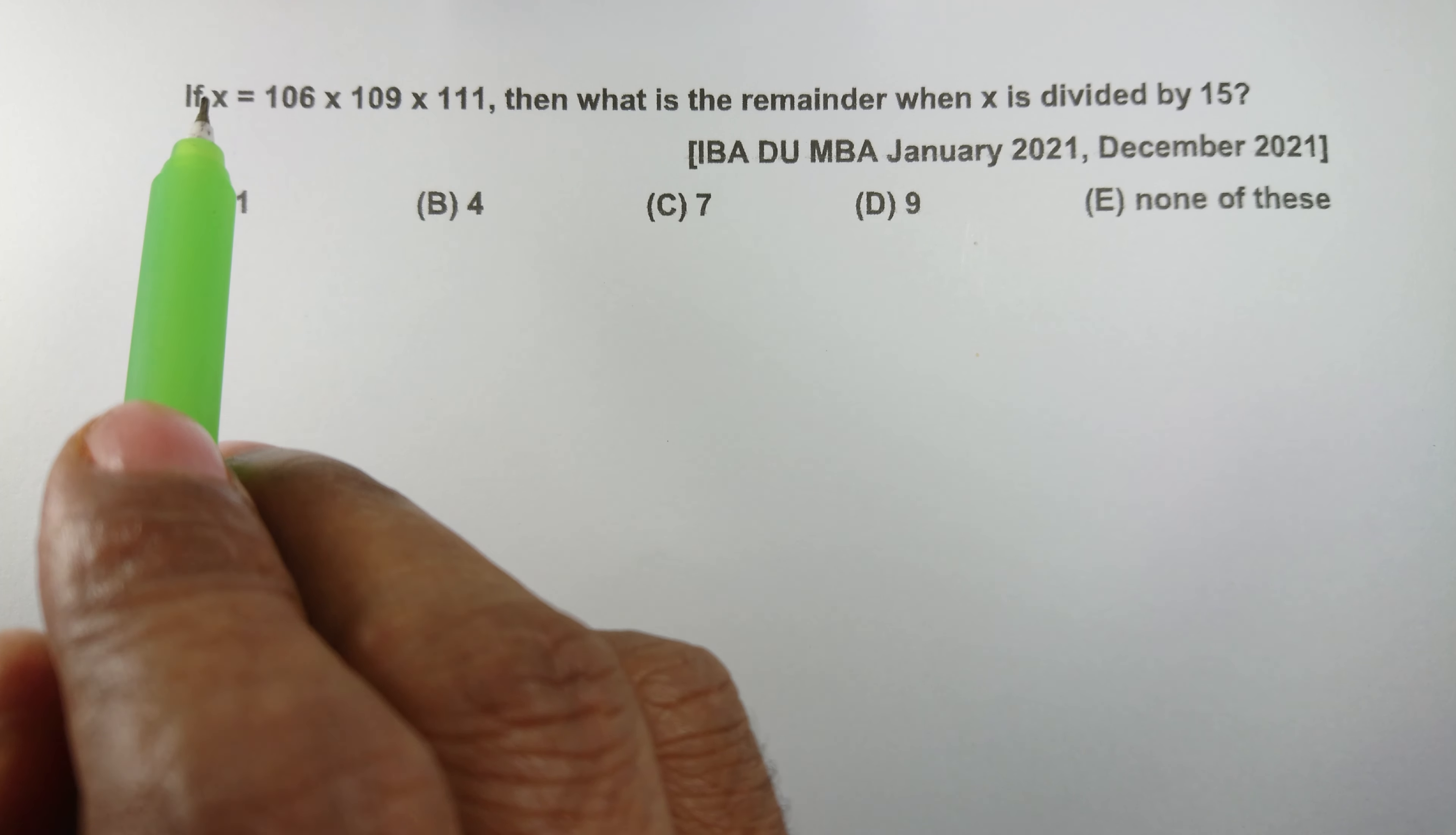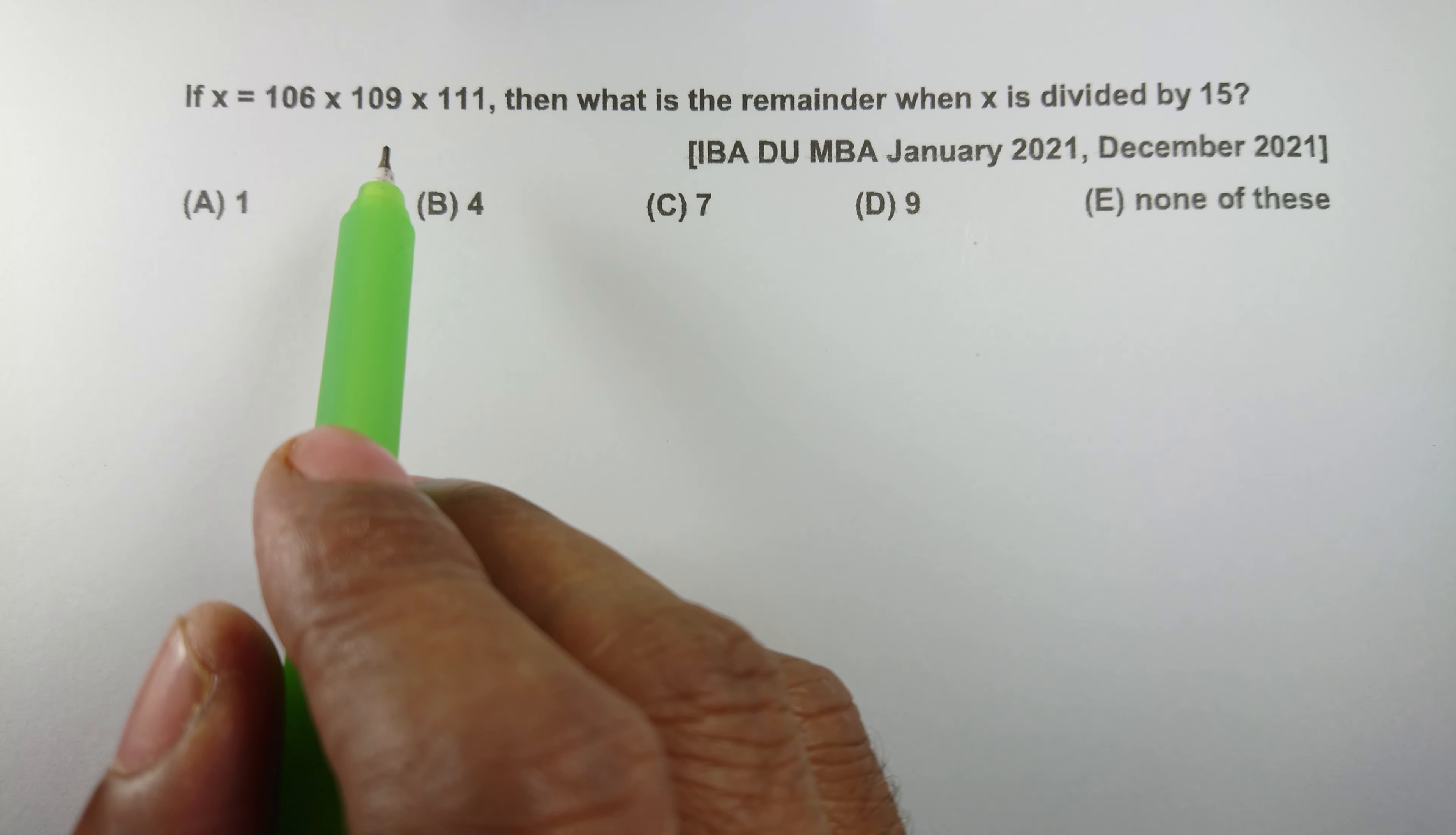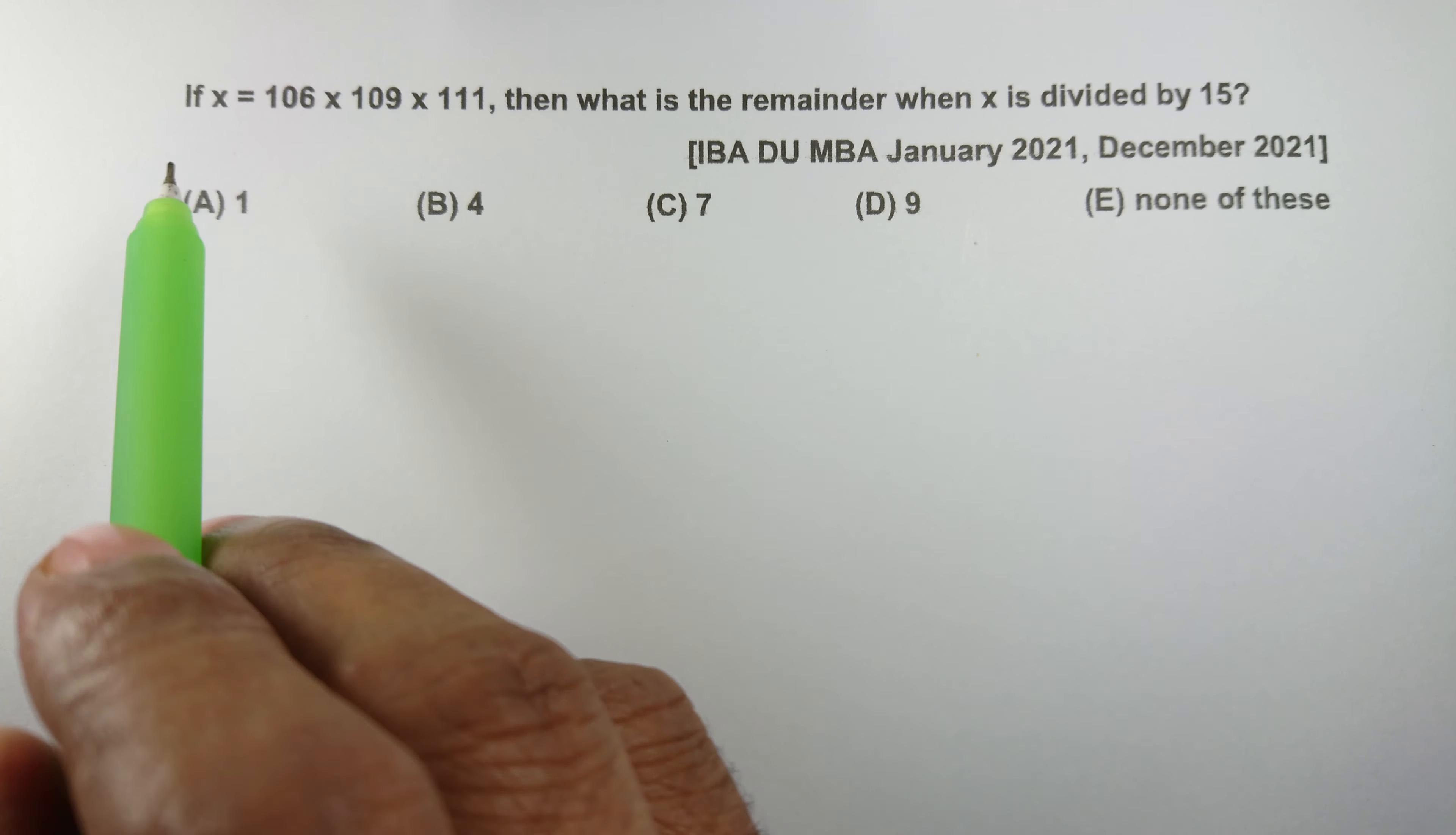If x equals 106 multiply 109 multiply 111, then what is the remainder when x is divided by 15?